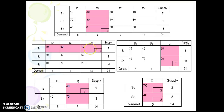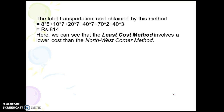We find that cell S1-B4 has a cost of 10. We check whether supply is less than demand — supply is less than demand, so we allocate the supply value. We then eliminate that column and check the remaining cells for the minimum cost, continuing until all allocations are complete.